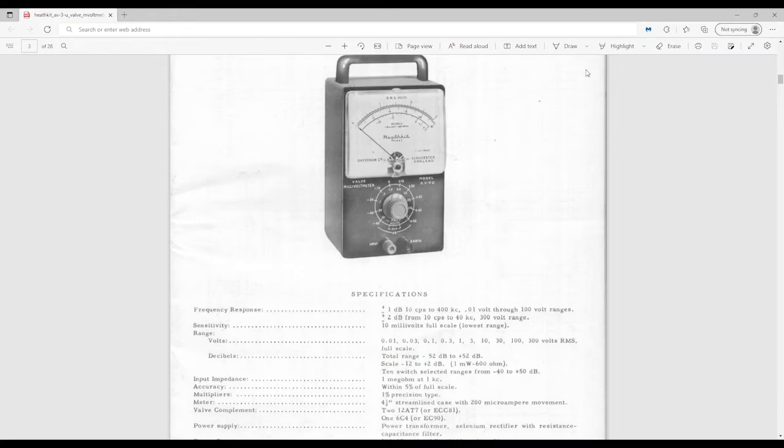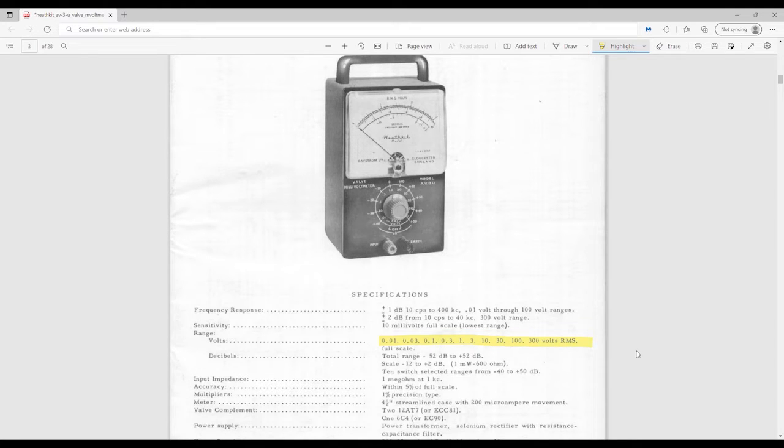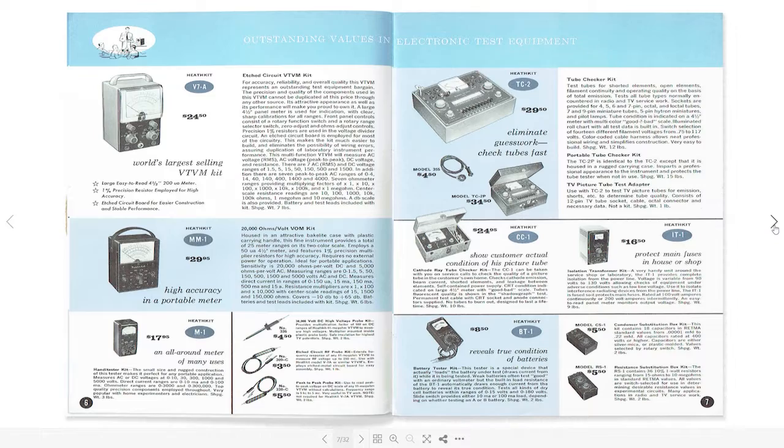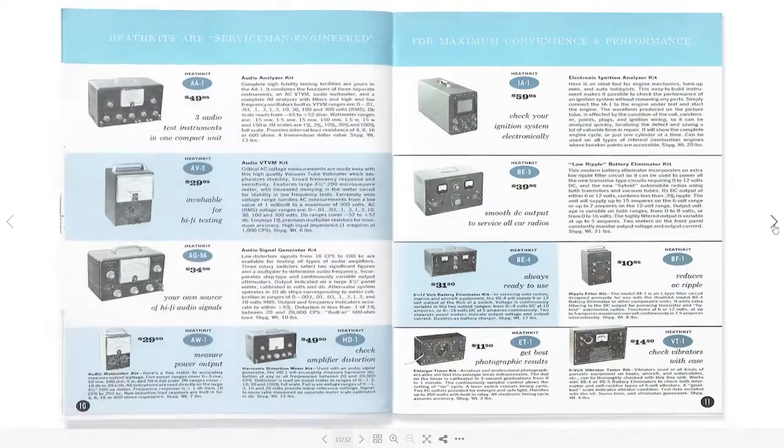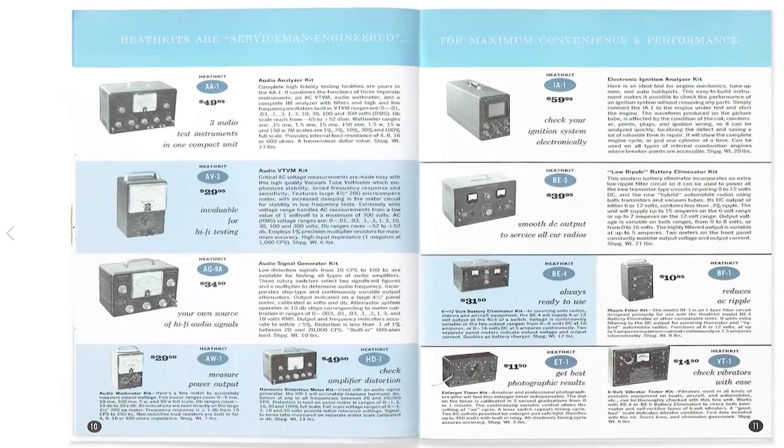The main advantage the AV3 has over other general-purpose vacuum tube voltmeters from that era is its large sensitivity range, from 10 millivolts to 300 volts. That equals a 90 dB range. Pretty impressive, and highly useful for its main intended application,